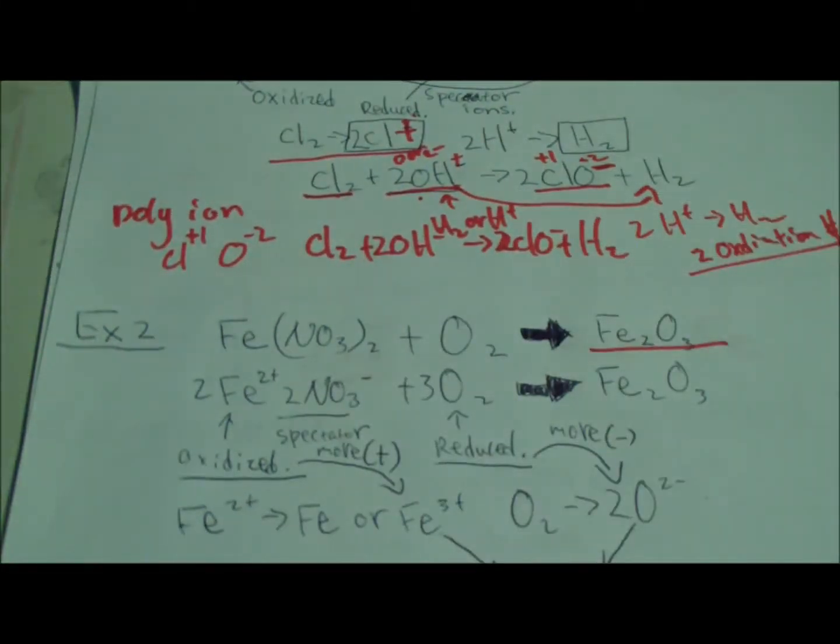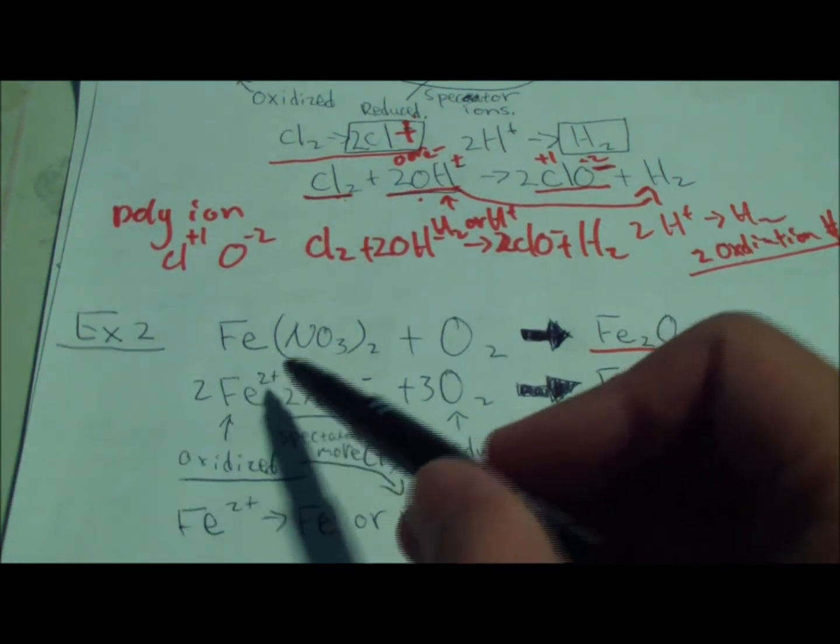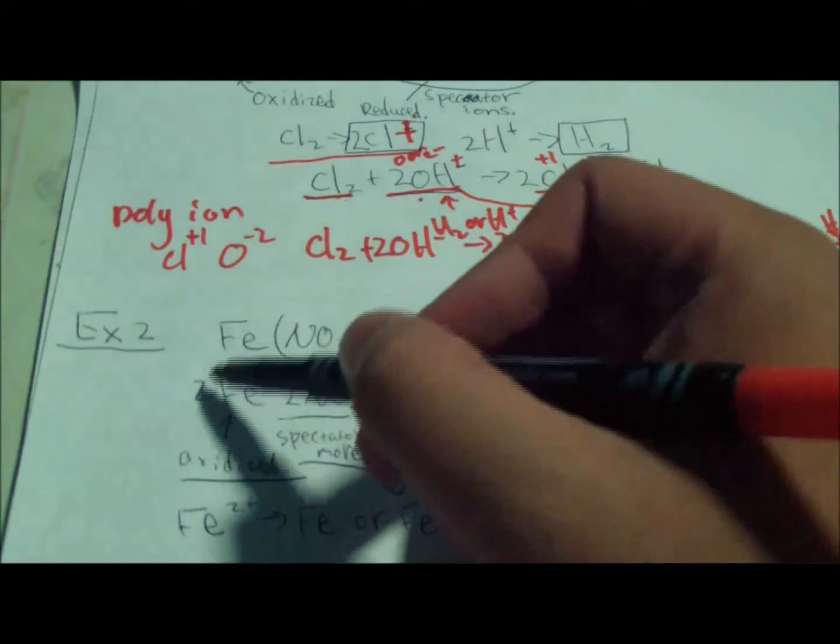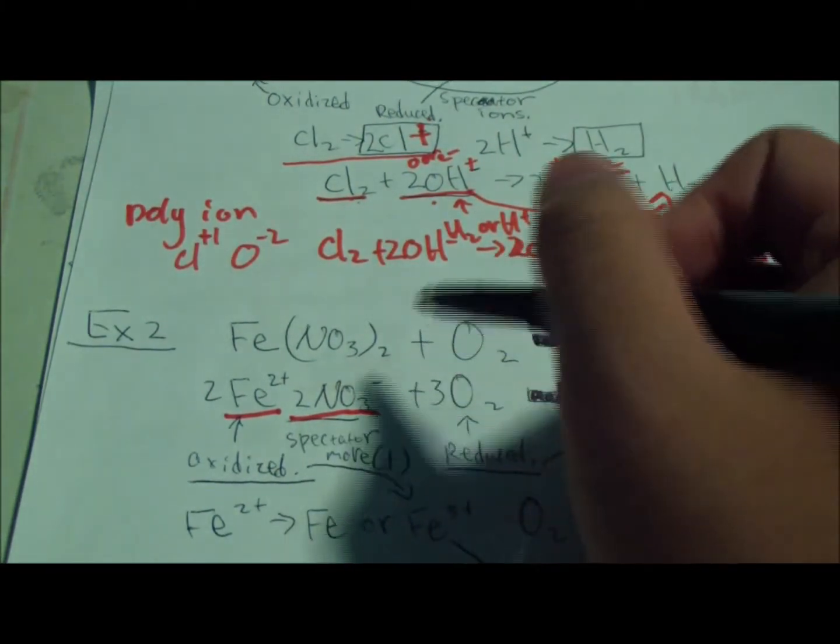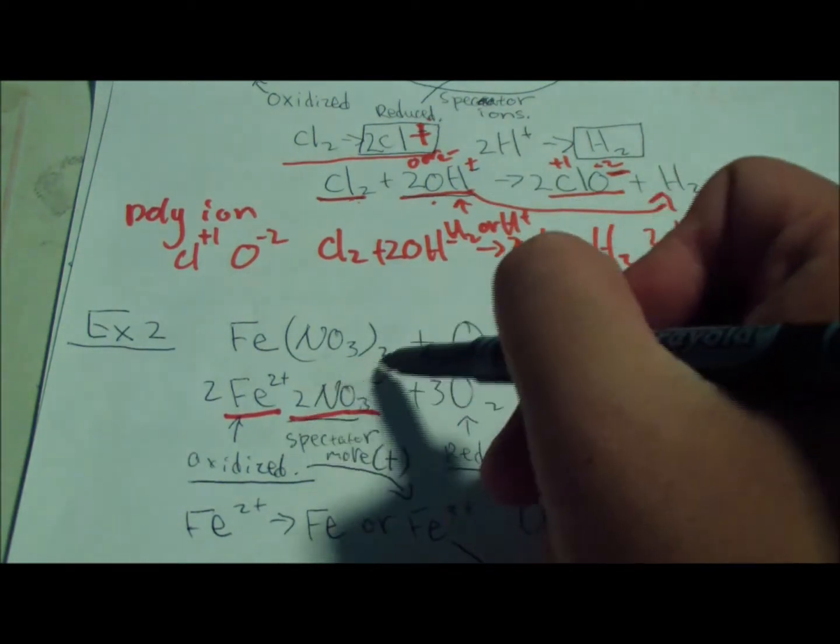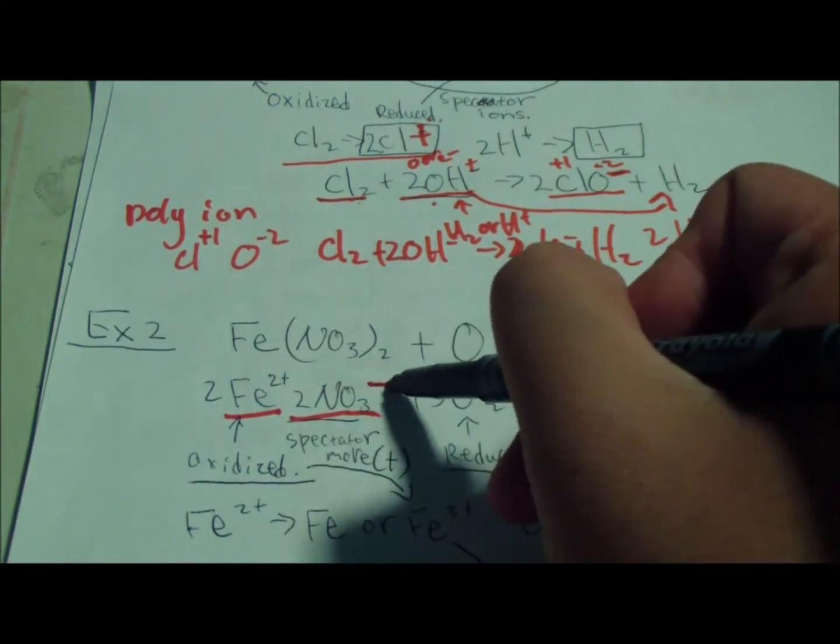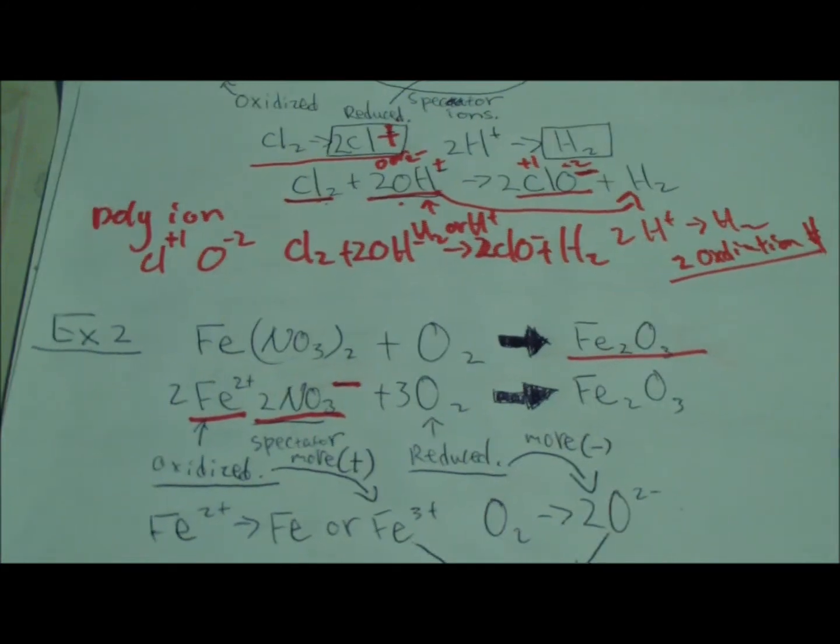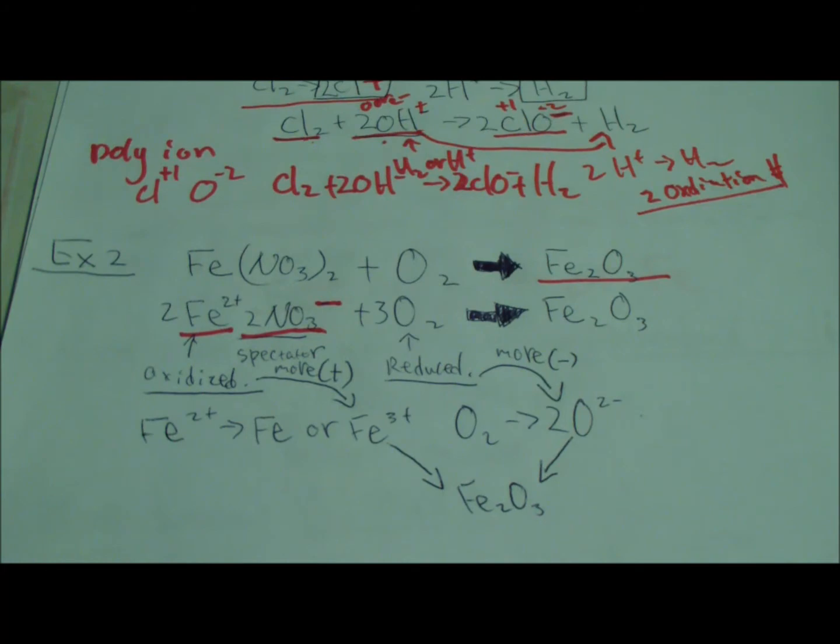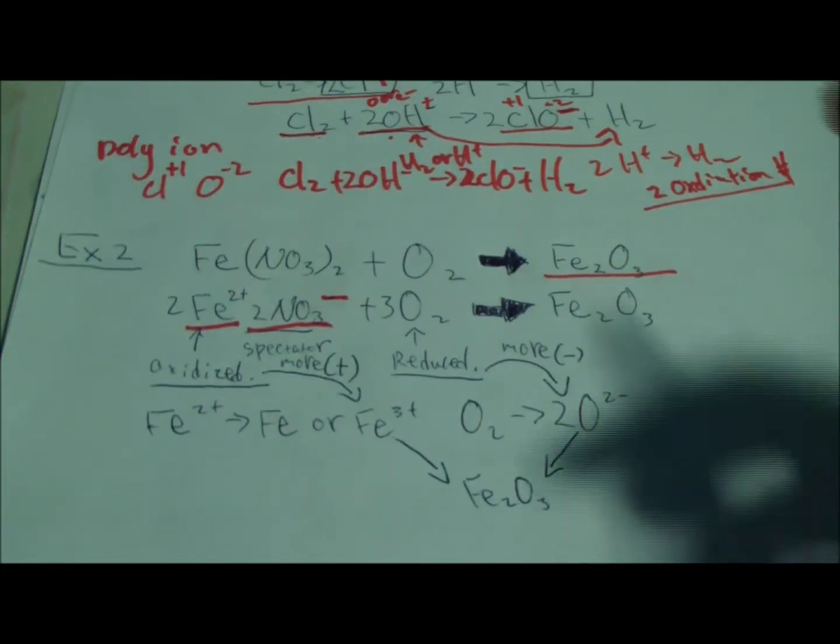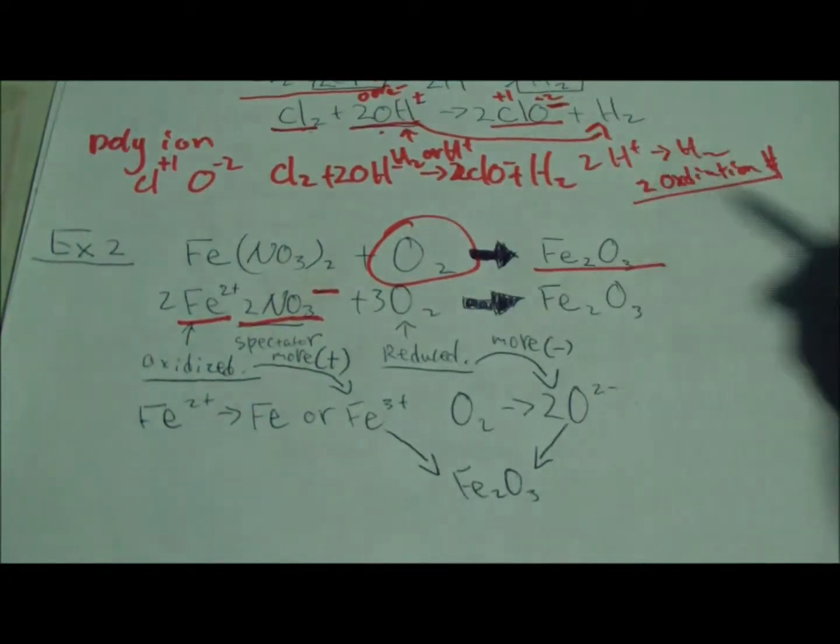Now, example two. Fe(NO3)2 plus O2. First think, iron two nitrate. Solubility? They're aqueous. So I will have Fe2+ and 2NO3-. We know this problem is a redox because of oxygen in elemental state.